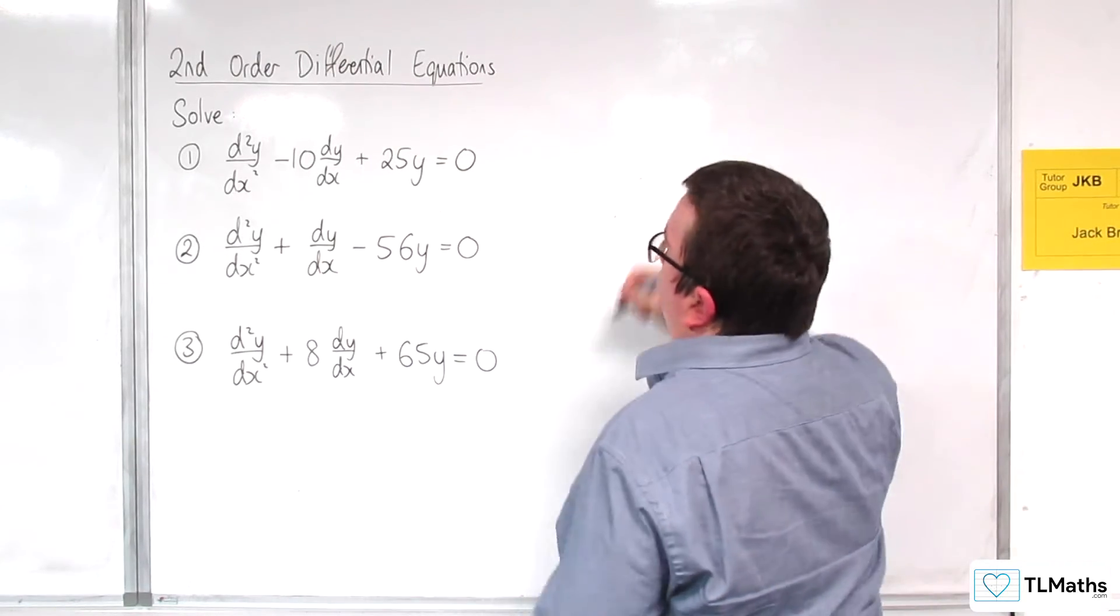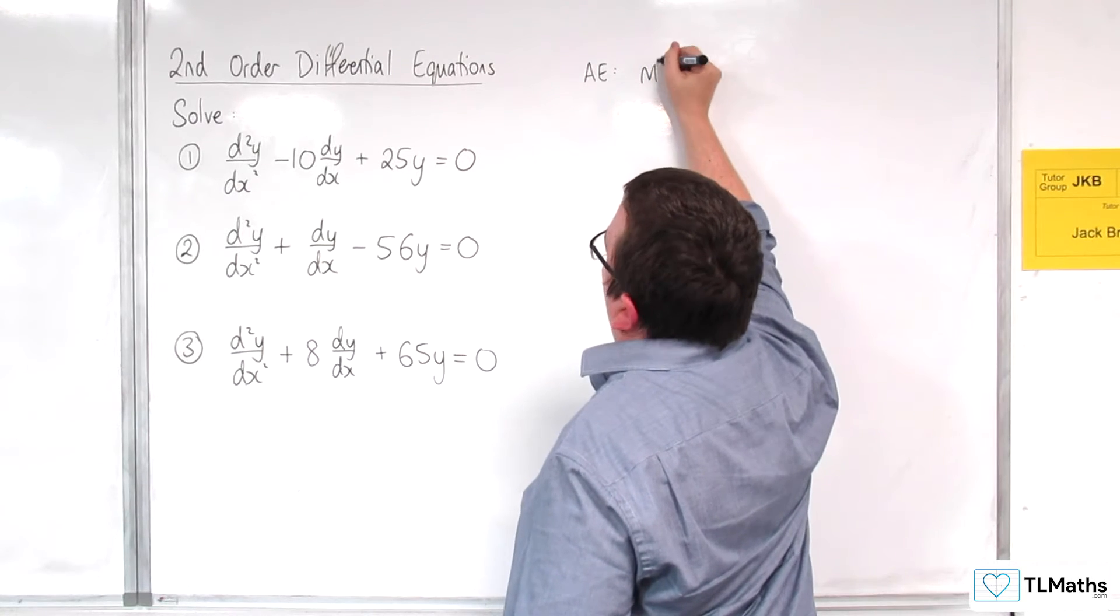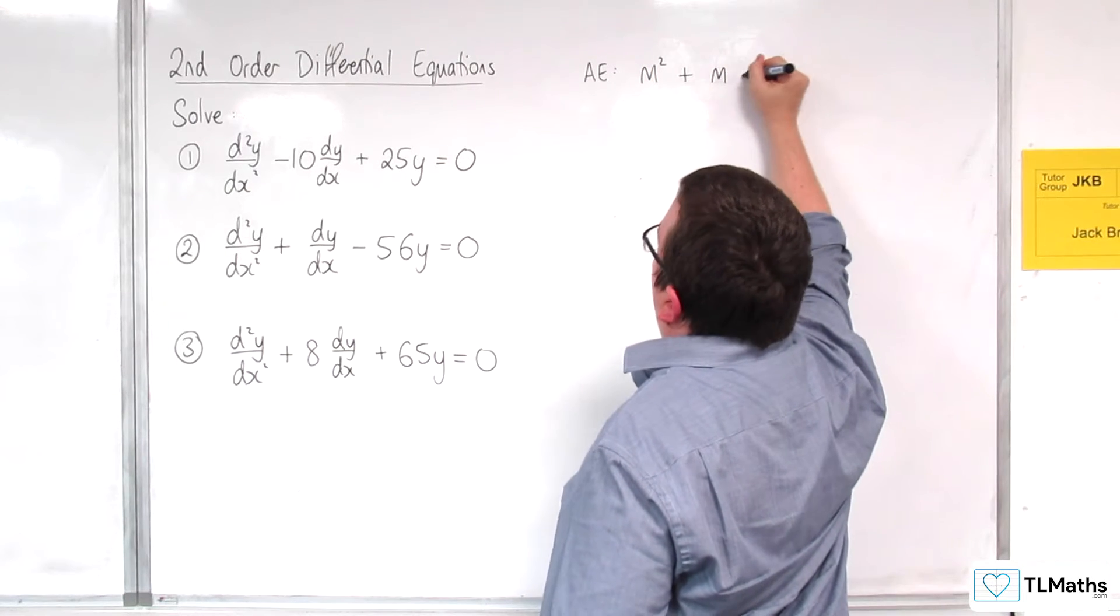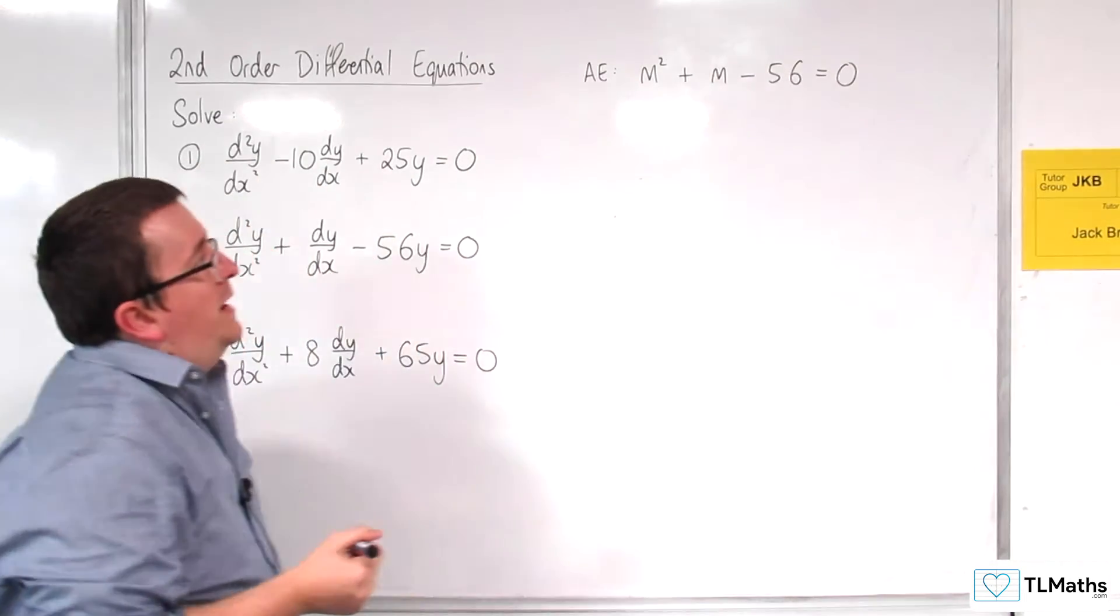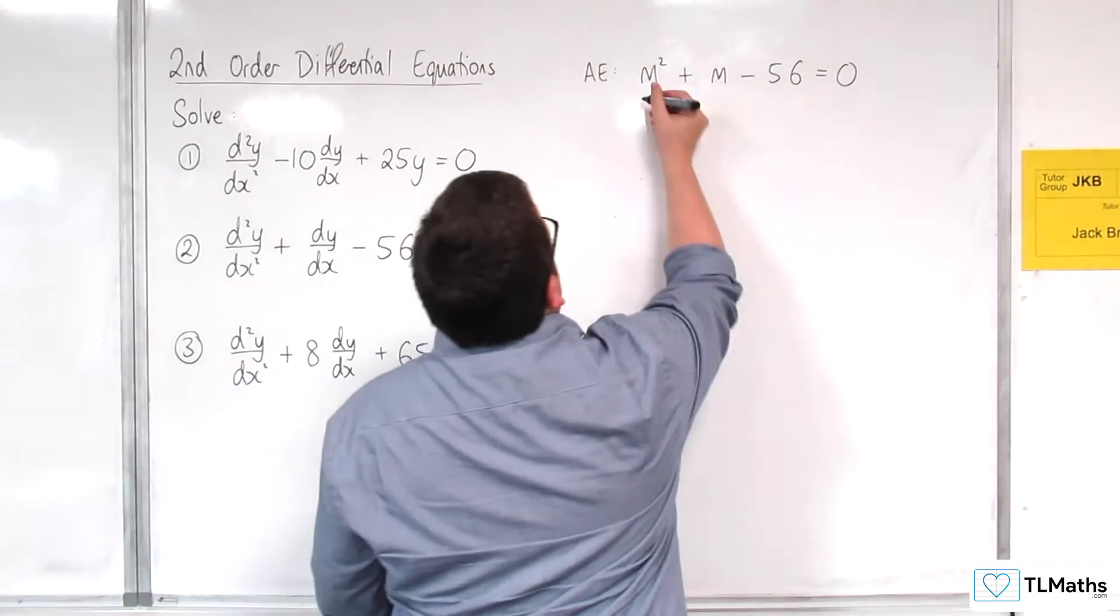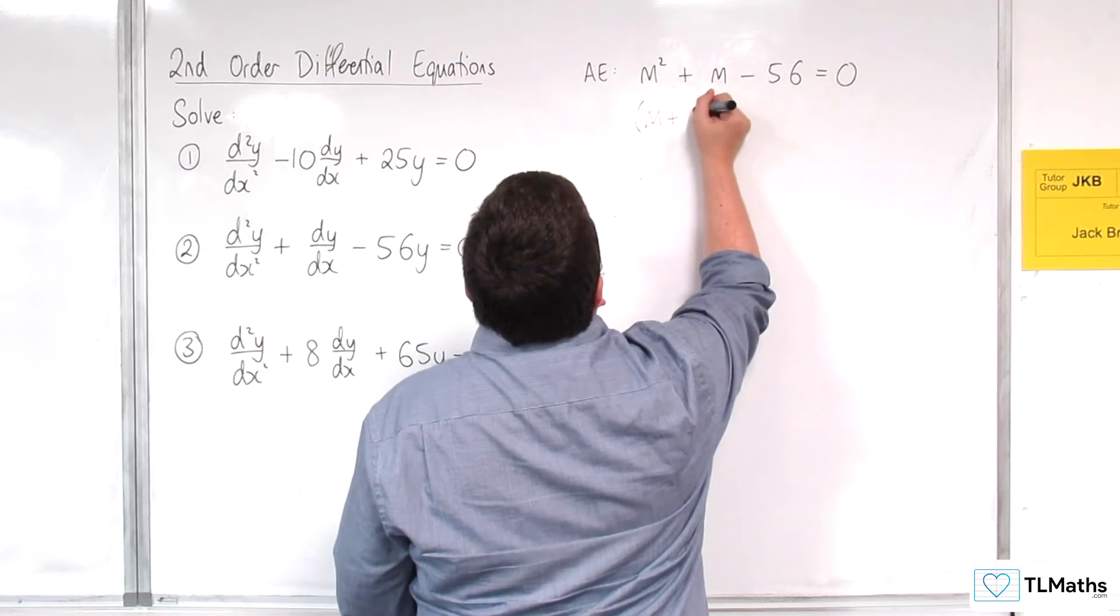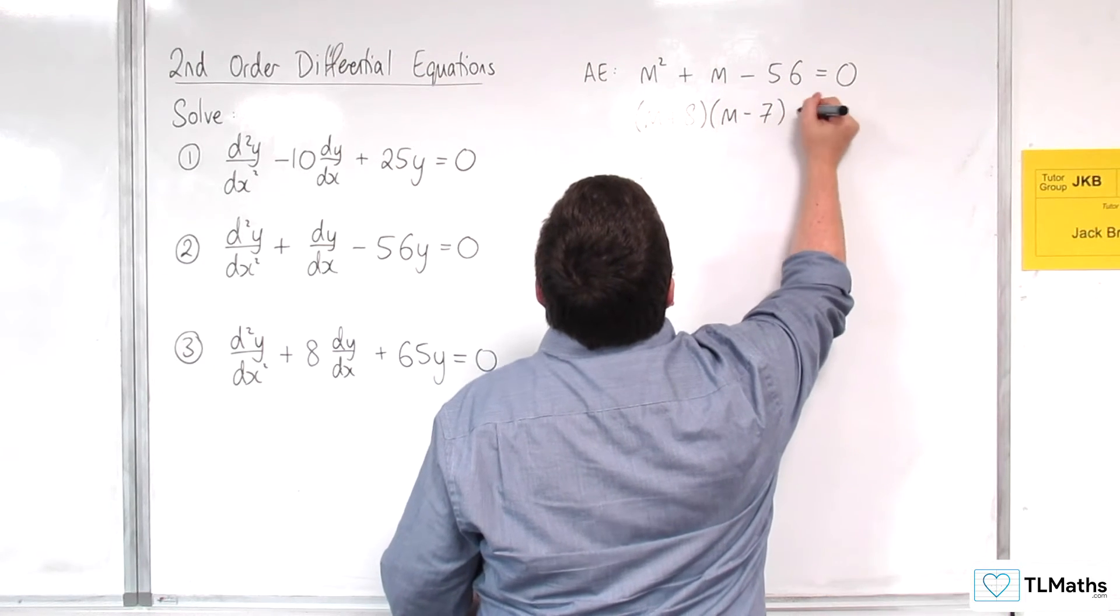So number two. Again, straight in with the auxiliary equation. m² + m - 56 = 0. Now again, this is a quadratic that we can factorize. This would be (m + 8)(m - 7) = 0.